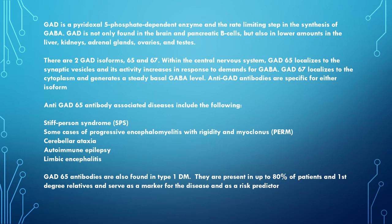Anti-GAD-65 antibody associated diseases include stiff person syndrome, some cases of progressive encephalomyelitis with rigidity and myoclonus (PERM), cerebellar ataxia, autoimmune epilepsy, and limbic encephalitis. GAD-65 antibodies are also found in type 1 diabetes mellitus. They are present in up to 80% of patients and first-degree relatives, and serve as a marker for the disease and as a risk predictor.